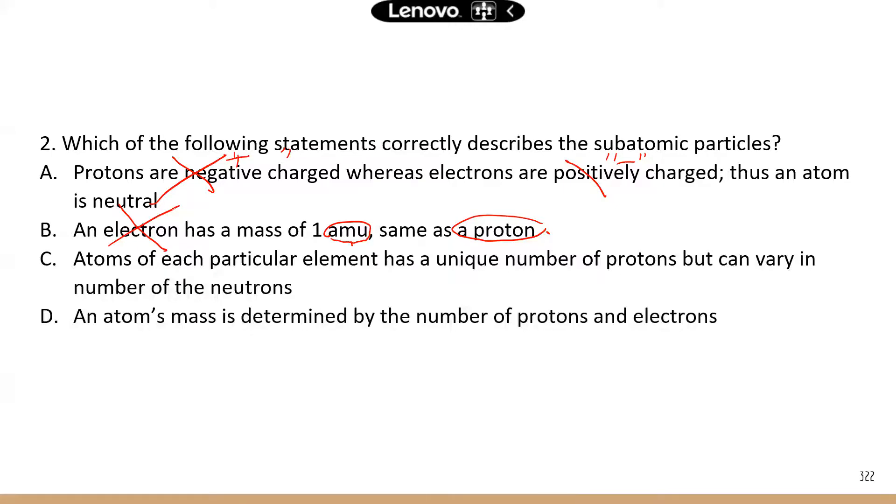Option C, atoms of each particular element have a unique number of protons, but can vary in the number of neutrons. That's correct. This statement is basically about isotopes. Carbon-12, carbon-13, they all have the same number of protons which is six, but they do have a different number of neutrons. Carbon-12 has six neutrons, and carbon-13 has seven neutrons.